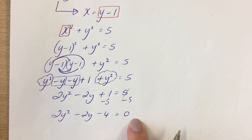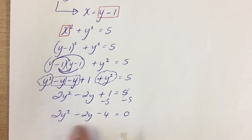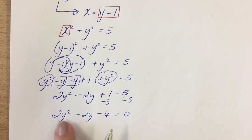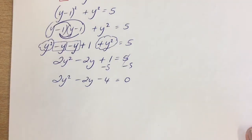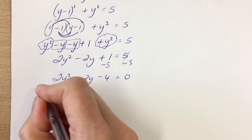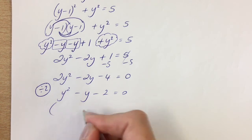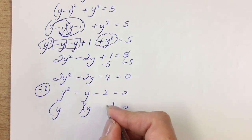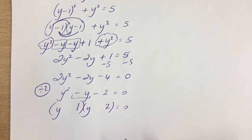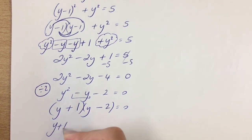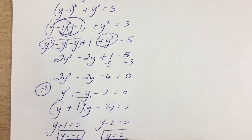You've got two options to solve this quadratic: the minus b formula or factorise. I'm going to factorise. Dividing across by 2 gives a much nicer quadratic: y squared minus y minus 2 equals 0. Factorising: y times y is y squared, factors of 2 are 2 times 1, and to make minus 1y in the middle it must be plus 1 minus 2. So y plus 1 equals 0 or y minus 2 equals 0, giving y equals minus 1 or y equals 2.